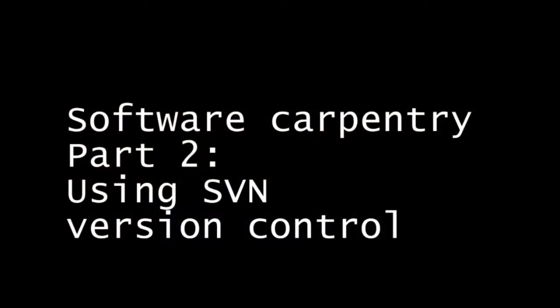Okay, welcome back. This is Software Carpentry, and in the next hour or so, I'm going to try to show you what I think is the single most important tool that scientists should use when doing any kind of computational research. The tool is called version control.